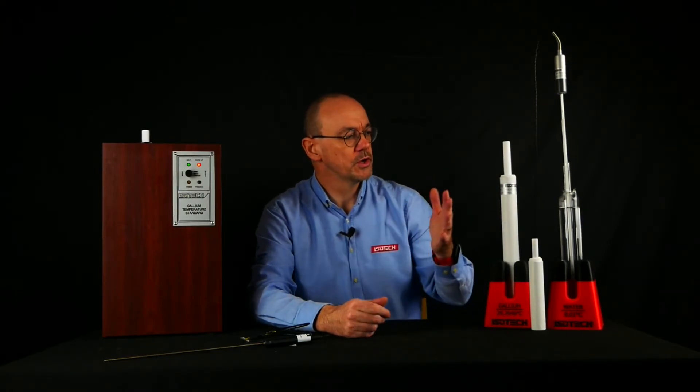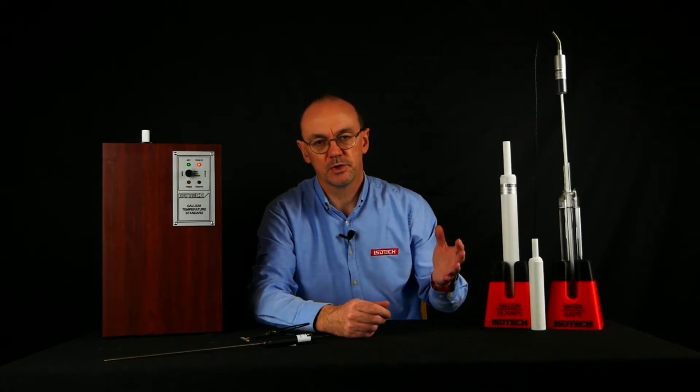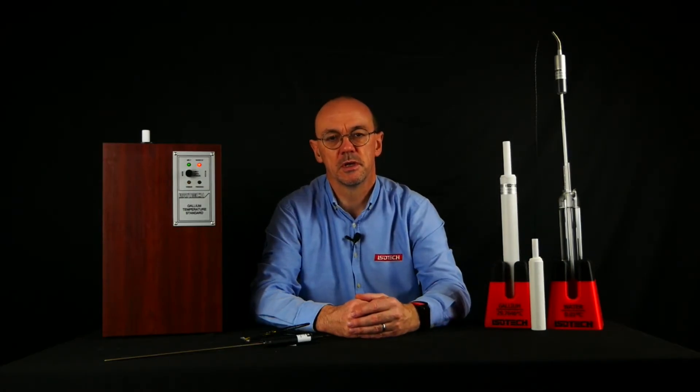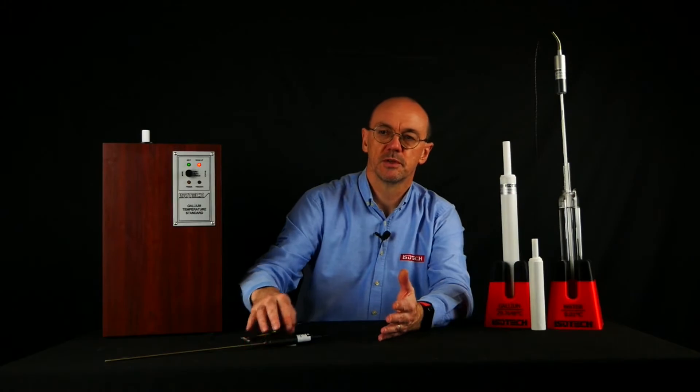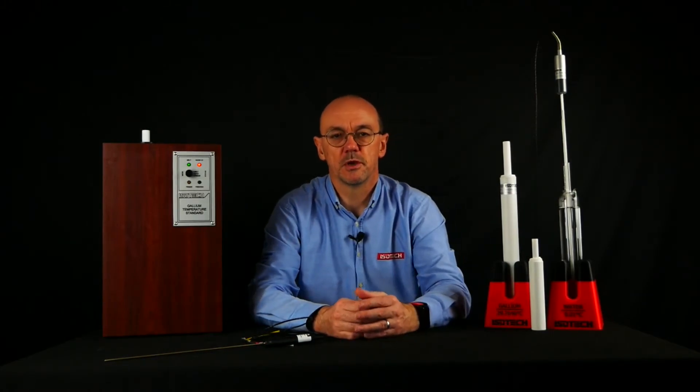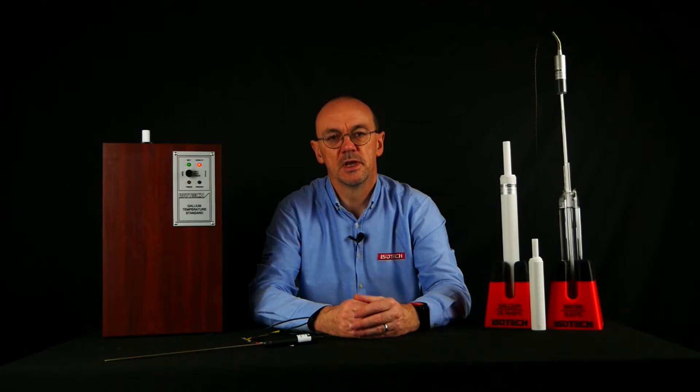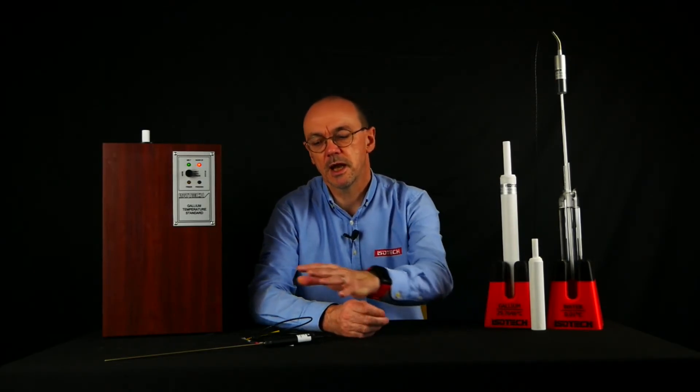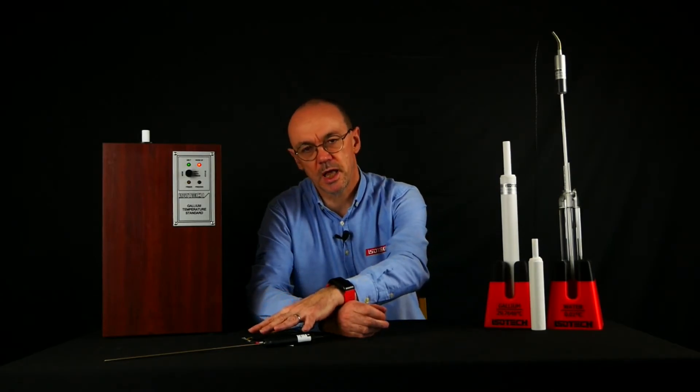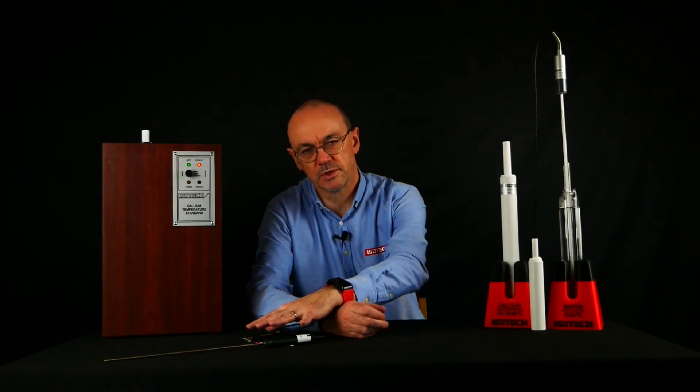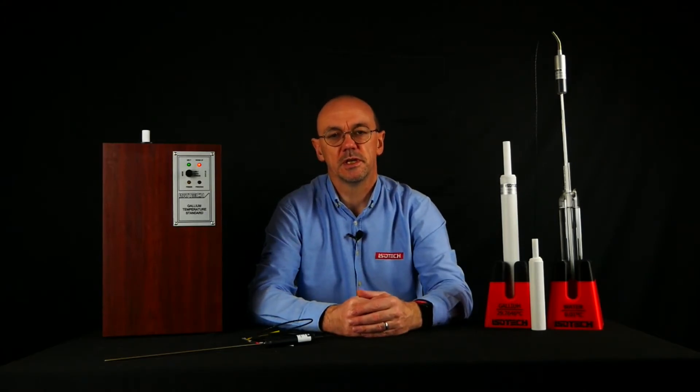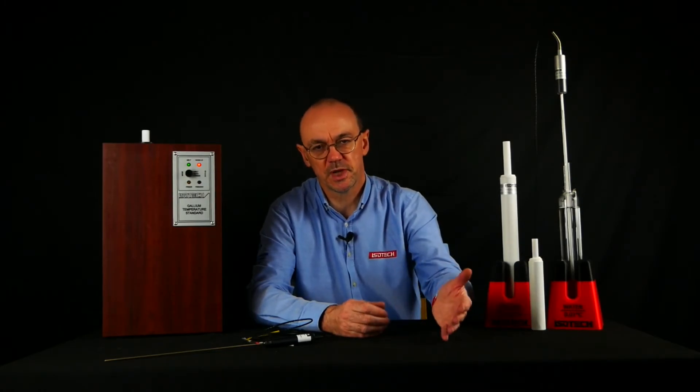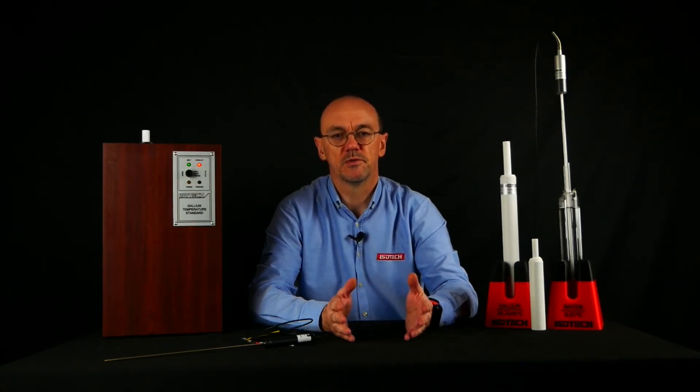We can track and check SPRTs very usefully with a water triple point measurement and a gallium measurement. For industrial thermometers the ratio will be different because the wire used in industrial thermometers has a different purity to that used in SPRTs. But again, in a calibration lab, having W gallium measurements for reference thermometers is very useful indeed. It tells us about the purity of the platinum, helps us to be confident in the thermometer's performance at different temperatures, and it's really useful for laboratories.